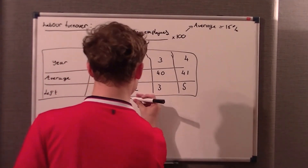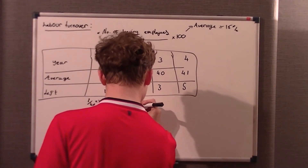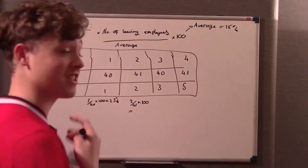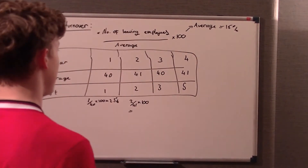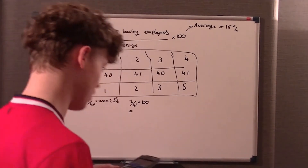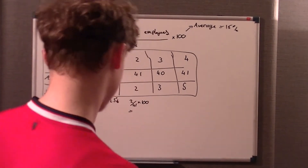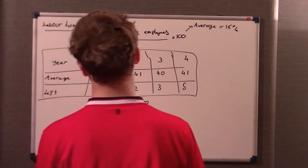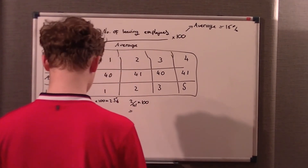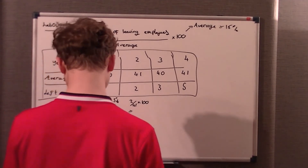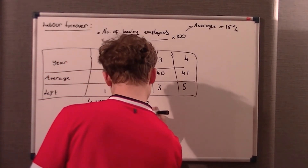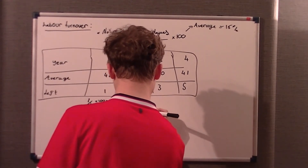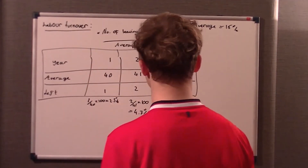Year 3: 3 over 40 times 100 gives 7.5%. Year 4: 5 over 41 times 100 gives 12%. As you can see, you might want to spot a trend — it's going from 2.5% to 4.7% to 7.5% to 12%. We're going in the right direction towards the 16% average.